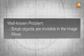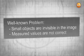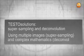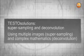The problem is well known. Small objects are invisible in the image, and even if visible, the measured values are not correct. The Testo Solutions: Super Sampling and Deconvolution. By using multiple images, super sampling,